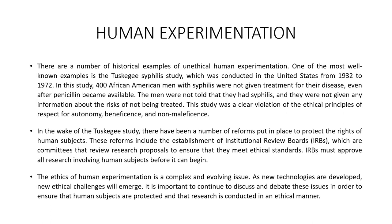There are many historical examples of unethical human experimentation. One of the most well known is the Tuskegee syphilis study, conducted in the United States from 1932 to 1972. In this study, 400 African-American men with syphilis were not given treatment for their disease even after penicillin became available. The men were not told they had syphilis and were not given any information about the risk of not being treated. This was a clear violation of the ethical principles of respect for autonomy, beneficence and non-maleficence. In the wake of the Tuskegee study, a number of reforms were put in place, including the establishment of institutional review boards — committees that review research proposals to ensure they meet ethical standards and must approve all research involving human subjects before it can begin.